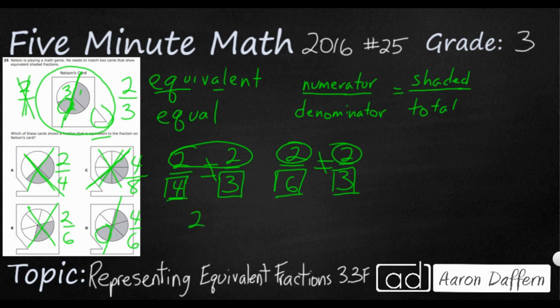Two-thirds is going to equal four-sixths. And if you take a look, you can see the pattern. We're doubling two and that gets to four. We're doubling three and that gets to six. That pattern holds and the answer is going to be D.